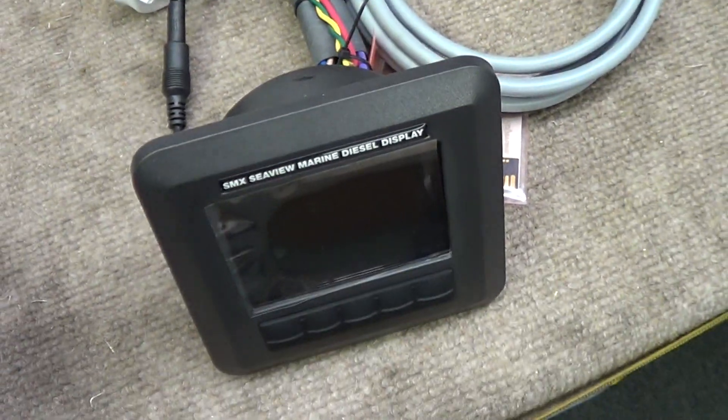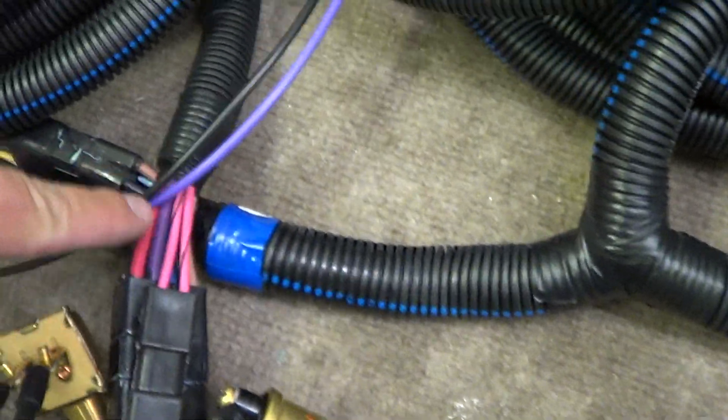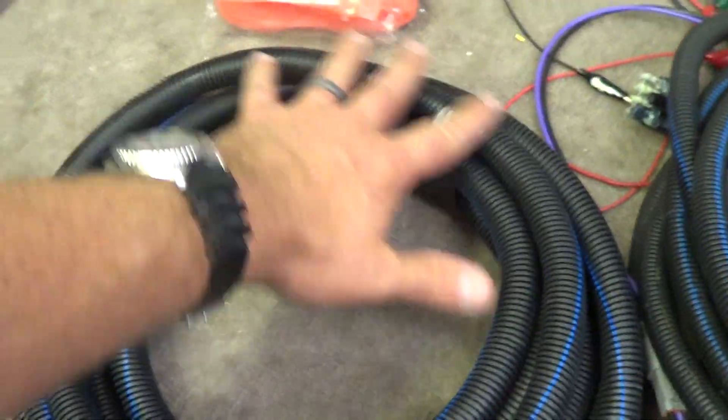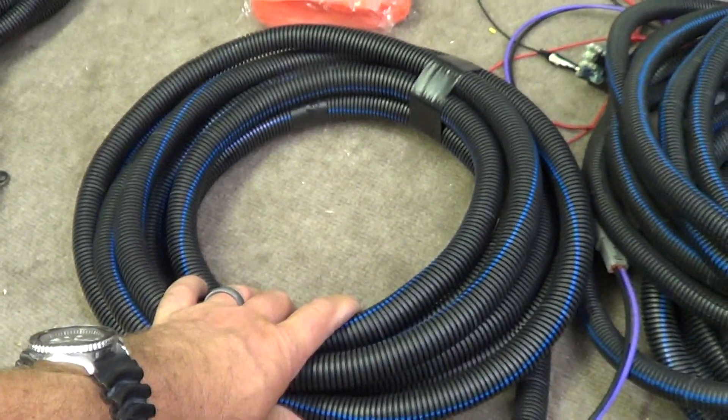Here's our main station. Blue is our second station, so we have our connection. We're going to run 20 feet up to the fly bridge of the boat.